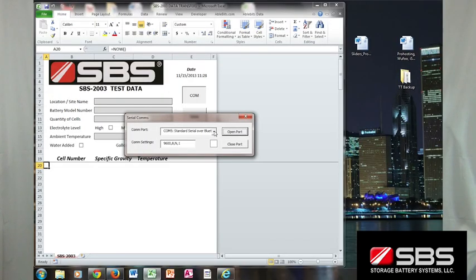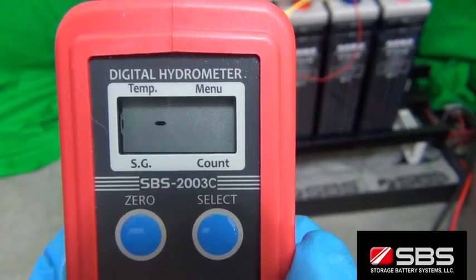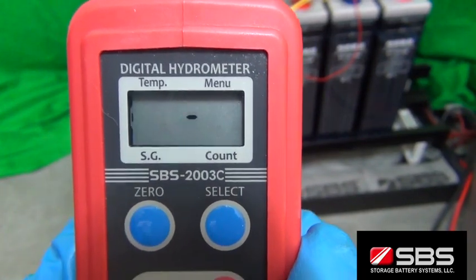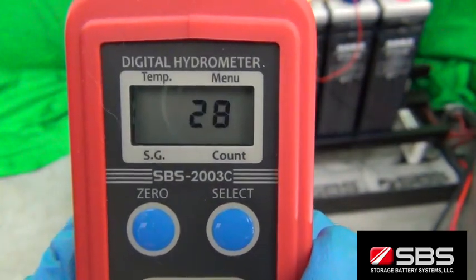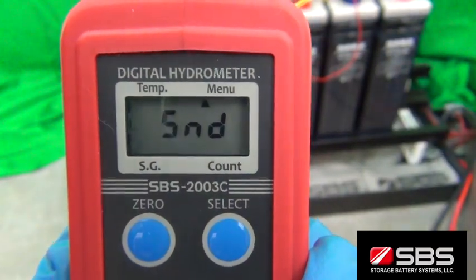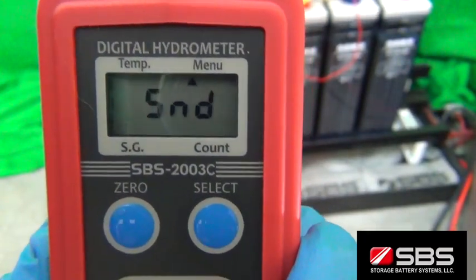On the data capture template, select the COM port assigned to the SBS 2003 and press the OPEN PORT button. The SBS 2003 will display dashes as it makes the Bluetooth connection, and then will display the count number as it transfers each piece of data.